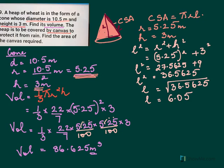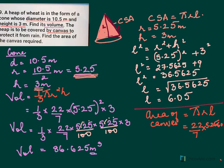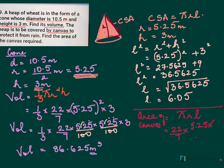Now remember we needed to find our CSA. We need to find area of canvas needed to cover, and that was pi RL. So pi, 22 by 7. We saw our R is 5.25 and the L is 6.05. So here again 6.05. You do this calculation.